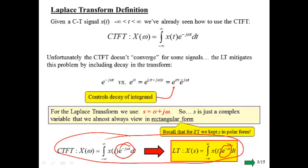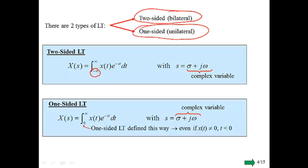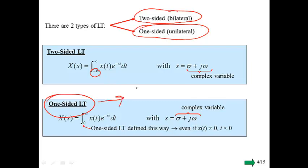Just like for the Z transform, there are two types of Laplace transforms: two-sided or bilateral, and one-sided or unilateral. For the two-sided, we integrate from minus infinity up to infinity; for the one-sided, we only integrate from zero up to infinity. Even if we put in a signal that is non-zero outside the region we're integrating over, we can still say it is its one-sided Laplace transform. We'll use the one-sided later to handle initial conditions of our system.